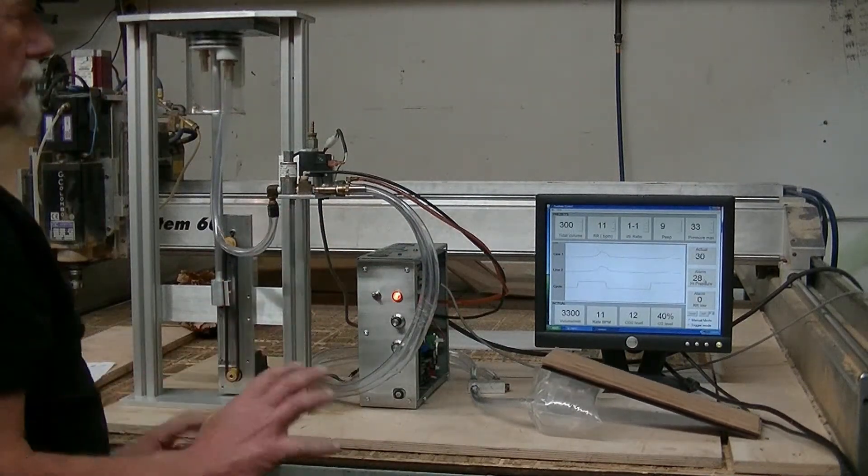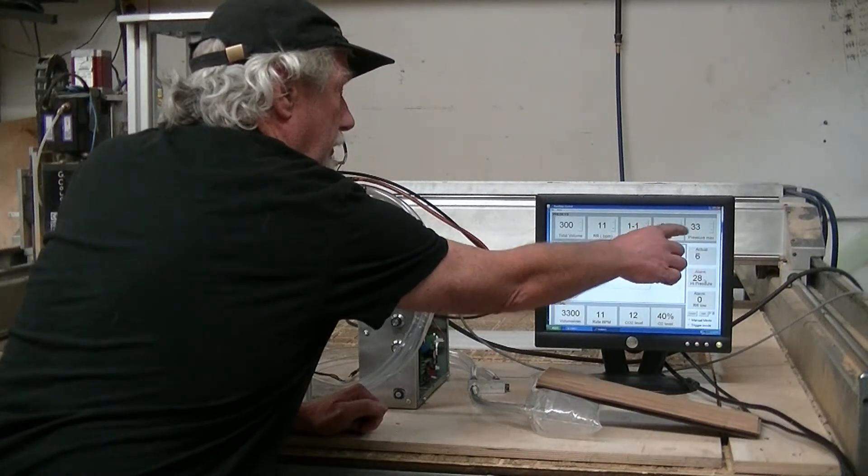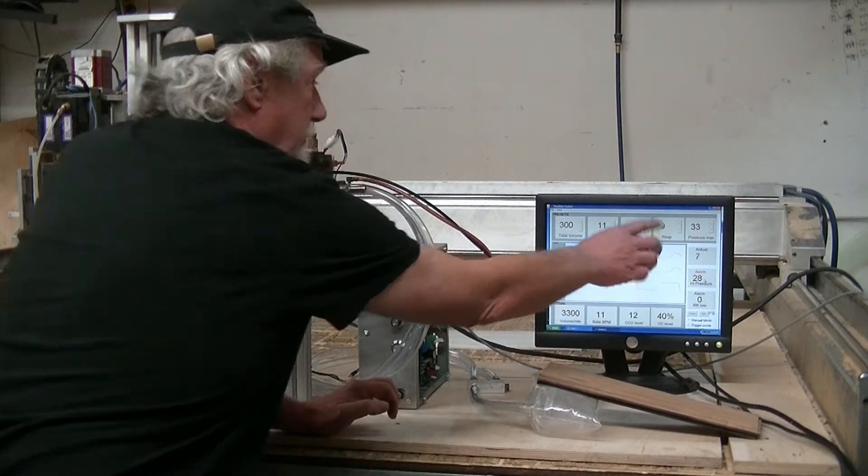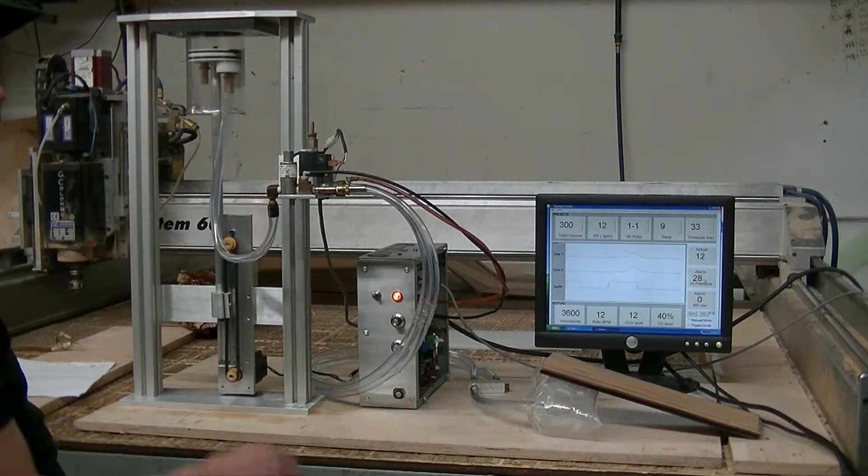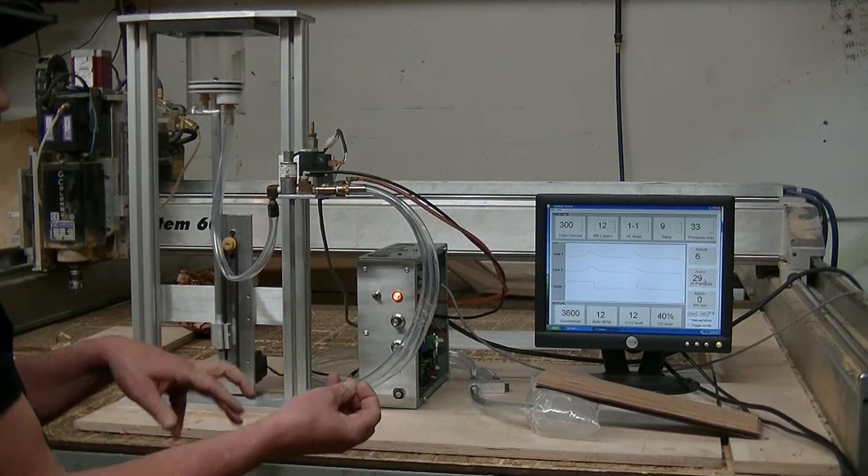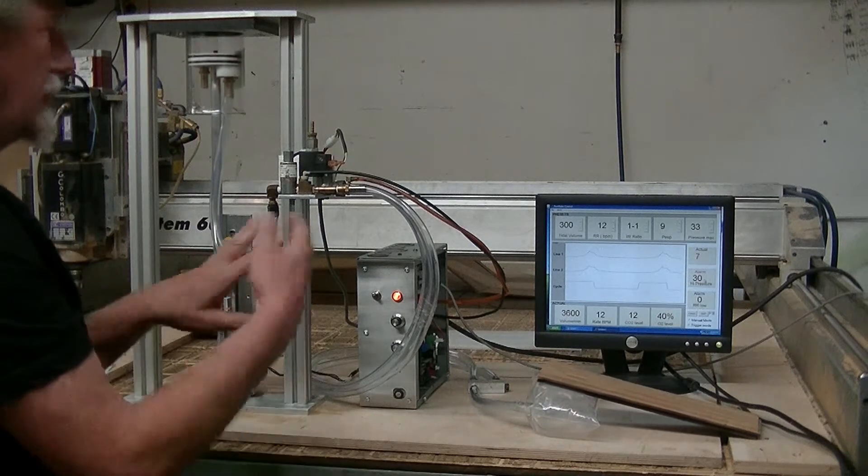Now this isn't calibrated at all. So these numbers don't mean real-world numbers. Like this isn't centimeters of water. It's a pressure on a D to A converter. So those would need to be calibrated later. That's not too hard to do. It's just a conversion factor.